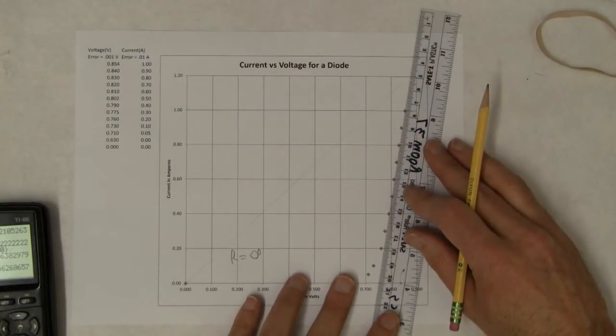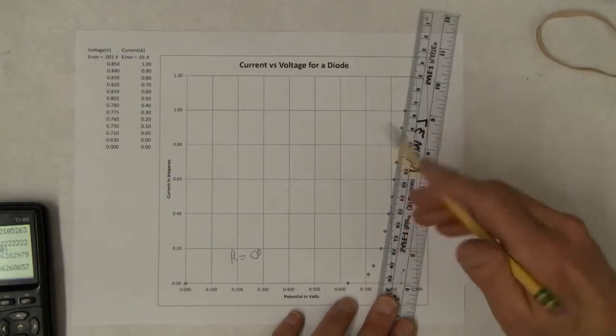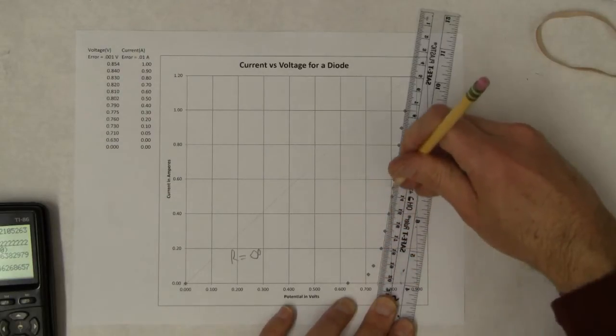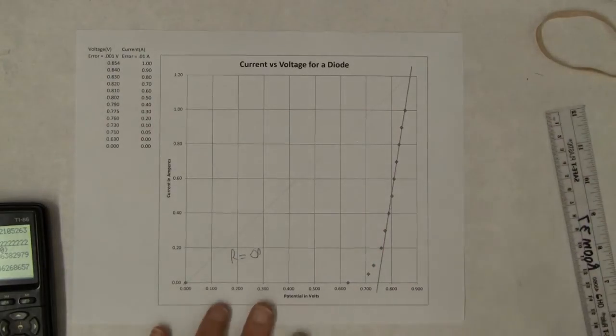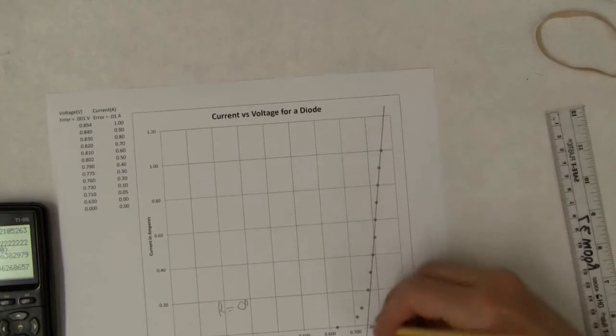So to find this differential resistance here, I'm going to put a line through those points like that. And now, I just have to read these points here.